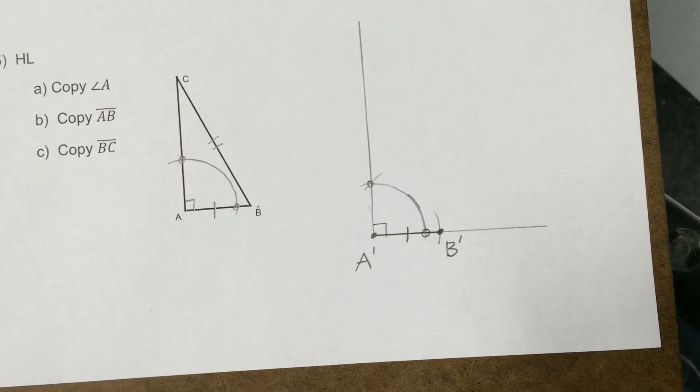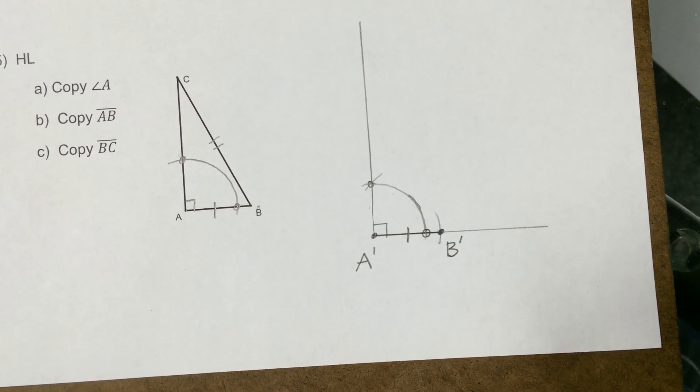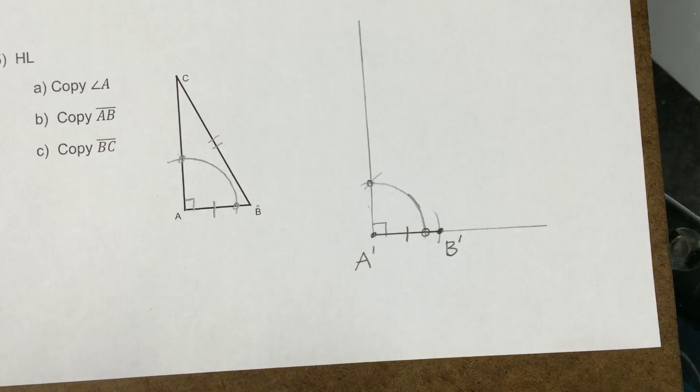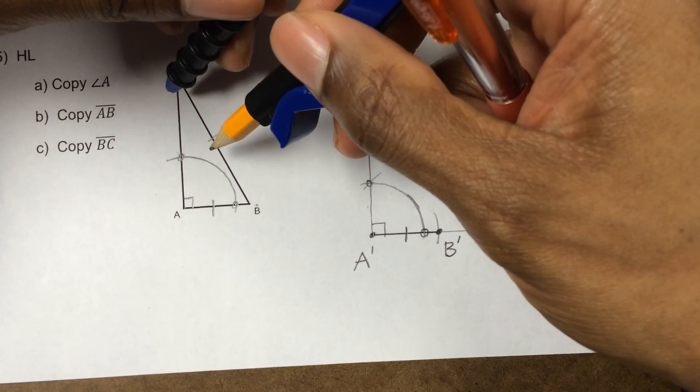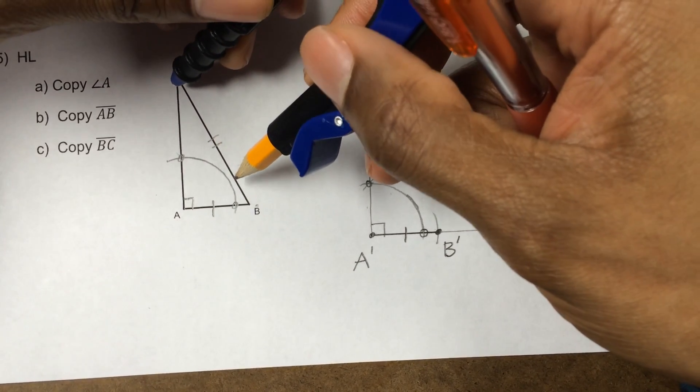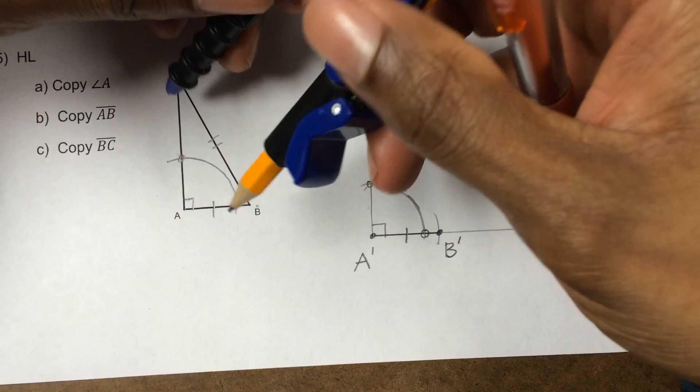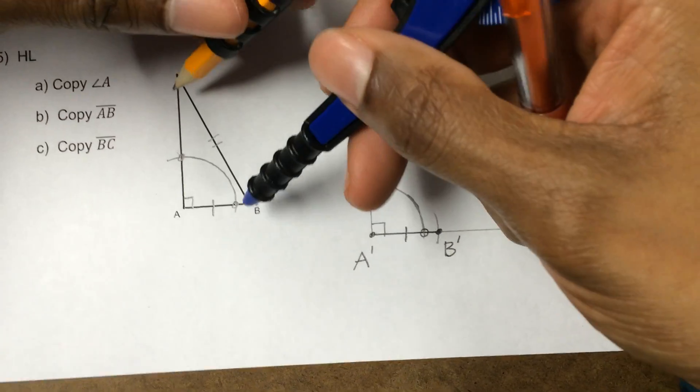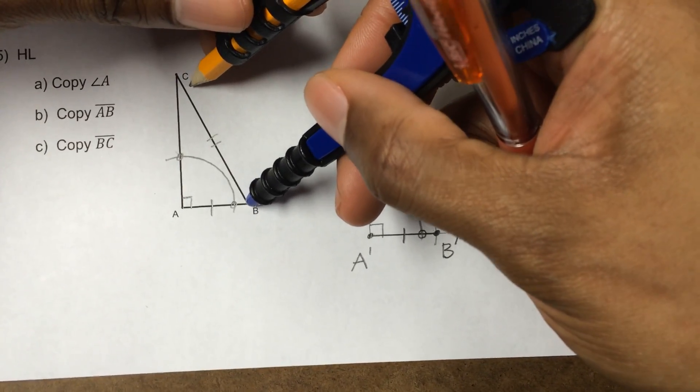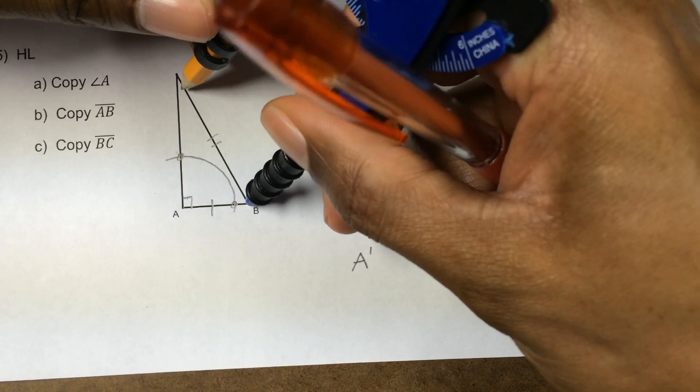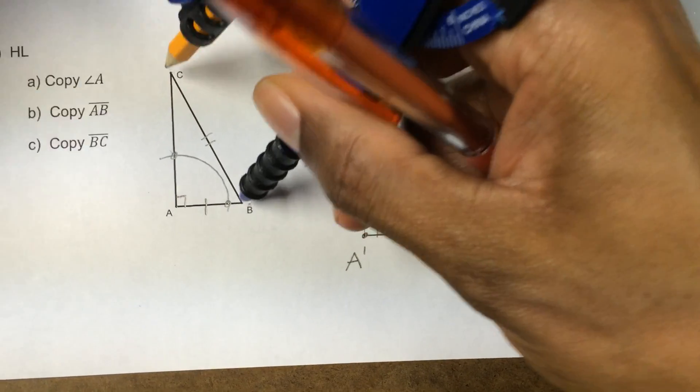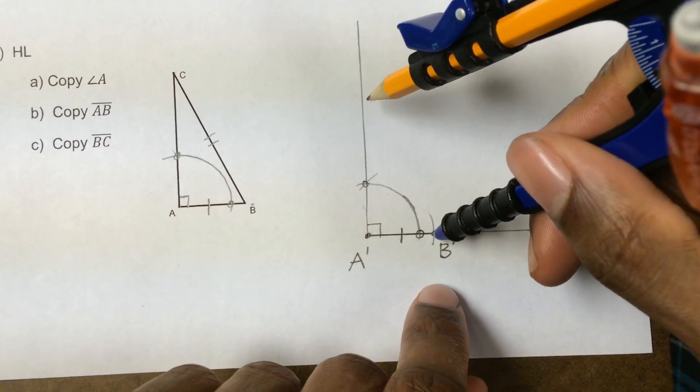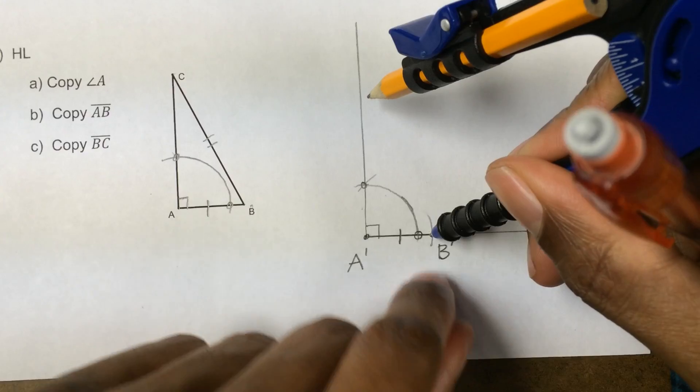And the way you duplicate a segment is you measure the length of that guy. OK, so using my compass, I'm going to capture the length of that hypotenuse. OK, so there's the length right there. So I'm just going to pick that up and copy it.